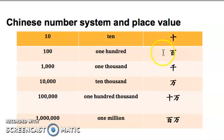And then after that is bai. Bai means 100. So 10 times 10 is 100, right? So after that will be 100 times 10 is 1,000. Qian.